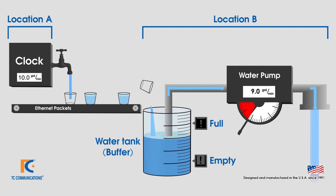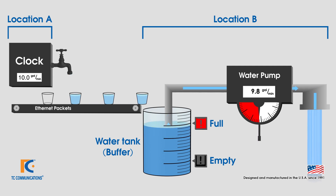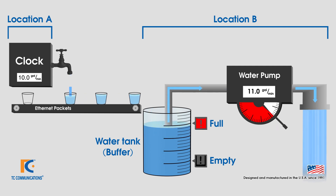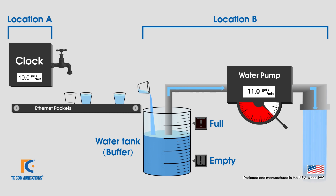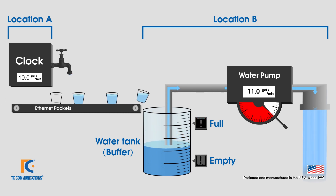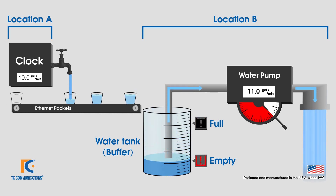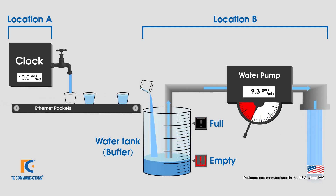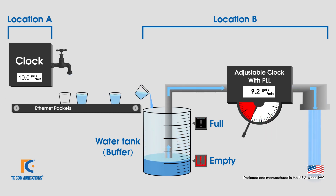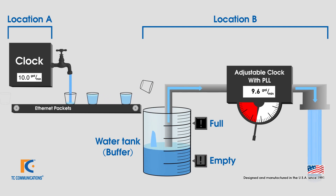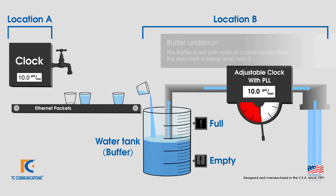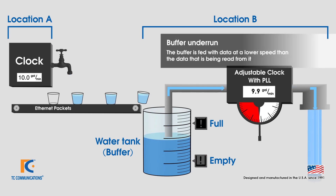In the previous example, the use of the buffer allowed a steady output while the buckets were arriving. But what happens if the buffer is drained too quickly? The buffer will eventually become empty and no flow will occur until more data arrives. This situation is called a buffer underrun.